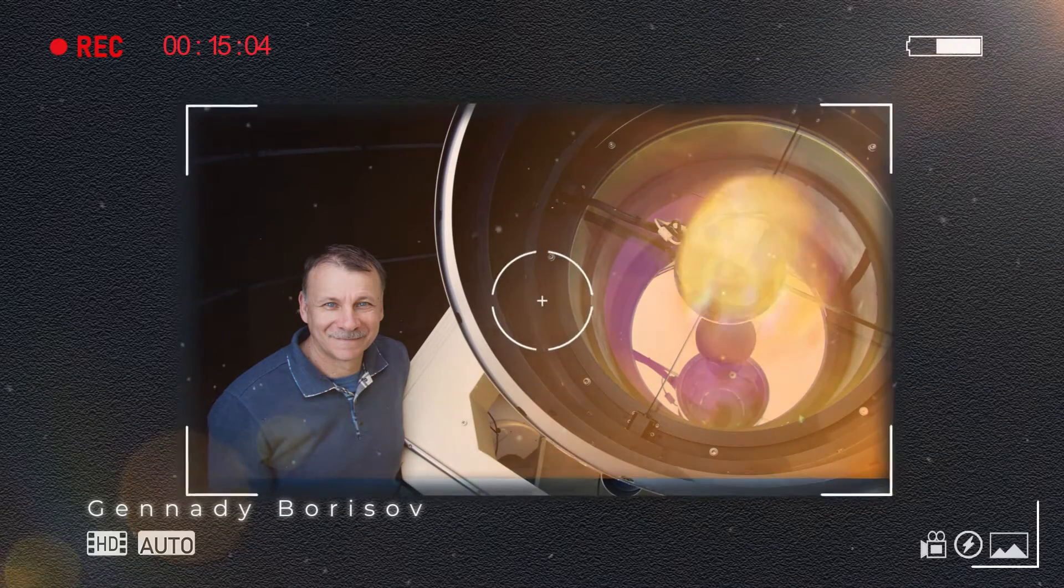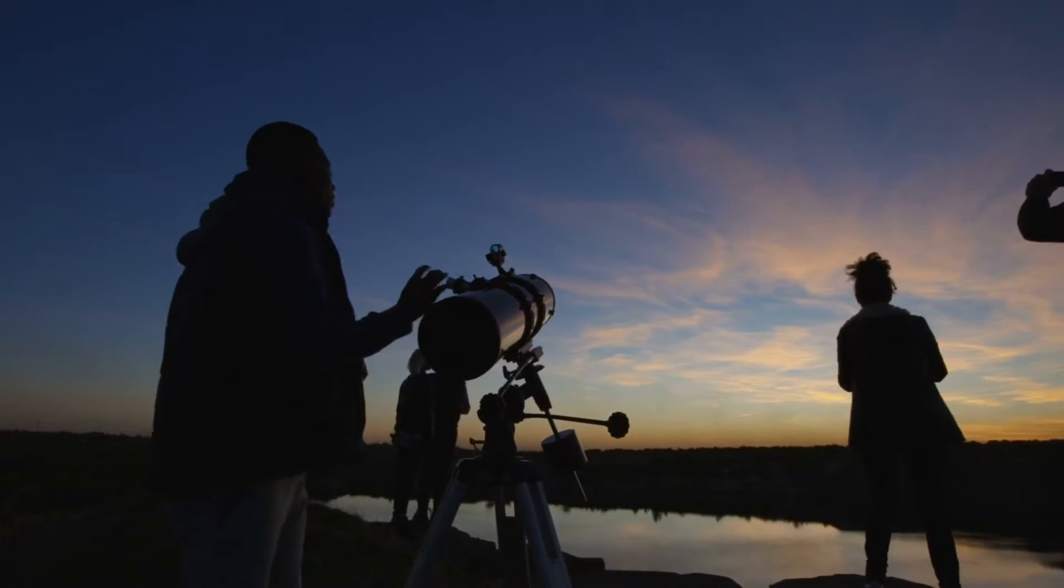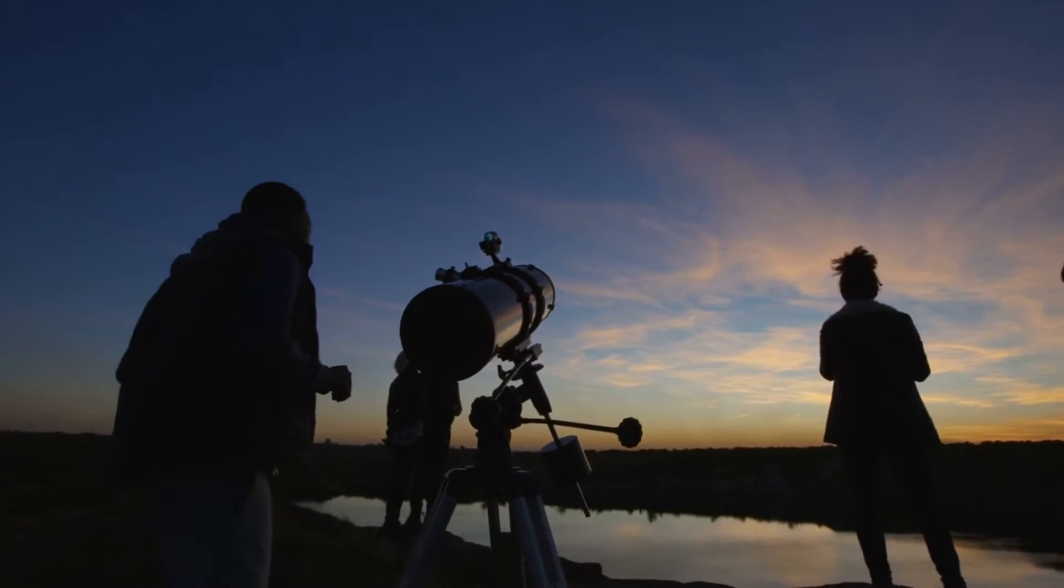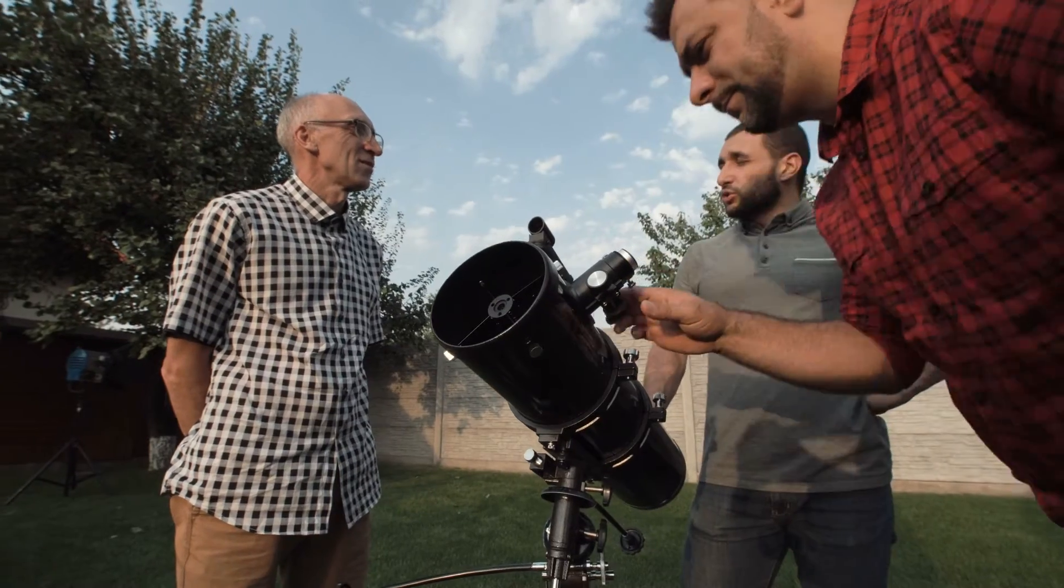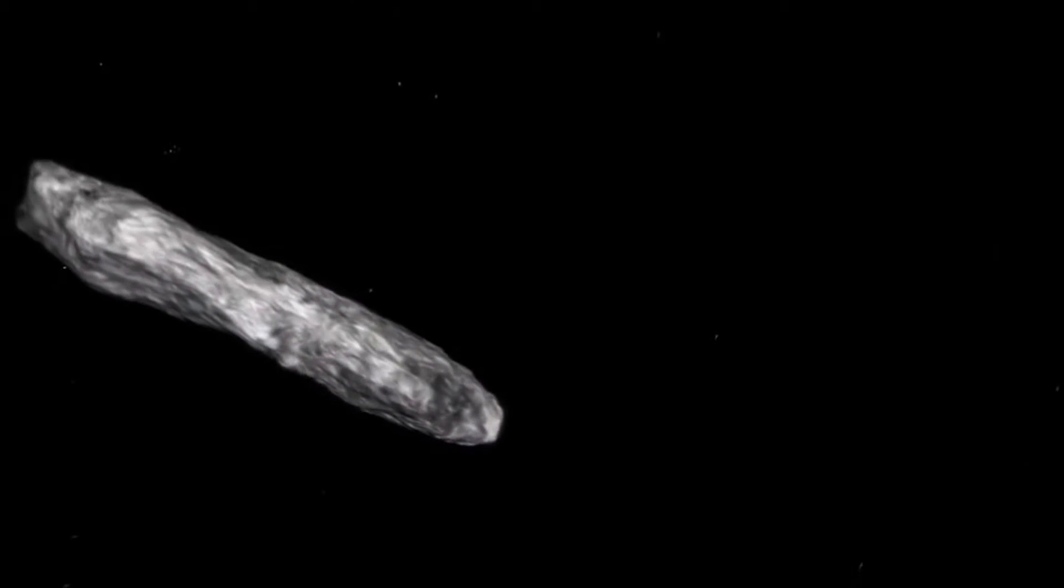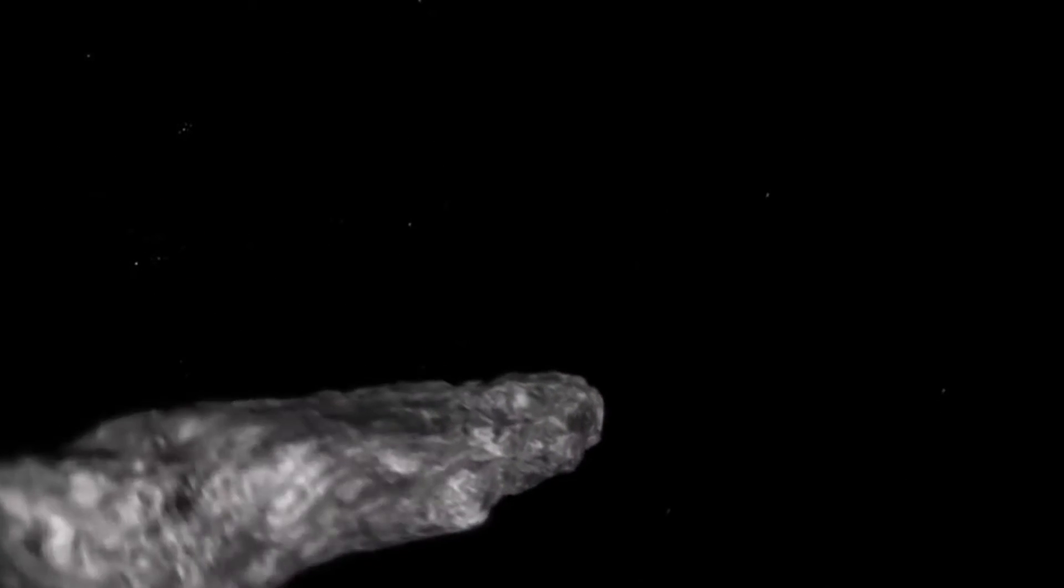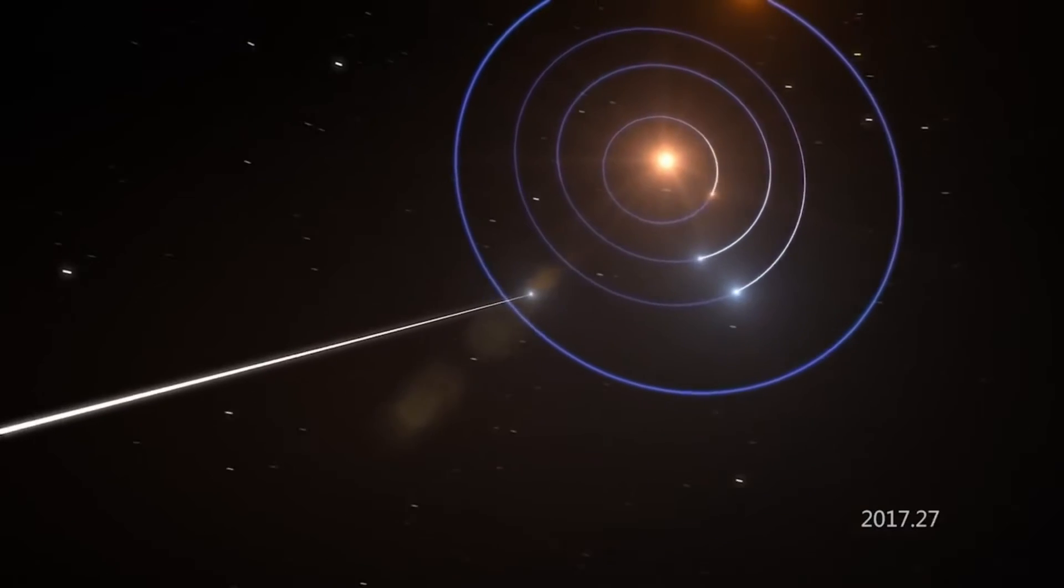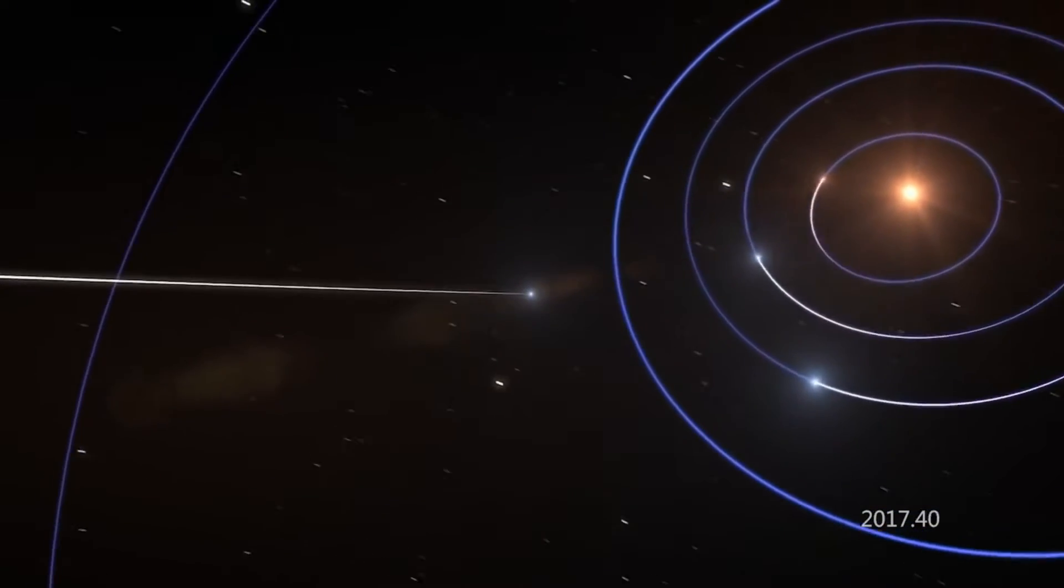Gennady Borisov, an amateur astronomer from Crimea, made this discovery while gazing at the stars through his homemade telescope. This was when he first spotted an unusual moving object in space. He realized there was something bizarre about this object even at first glance. This unidentified object was moving in a completely different direction than the other asteroids in the main asteroid belt surrounding the Sun.